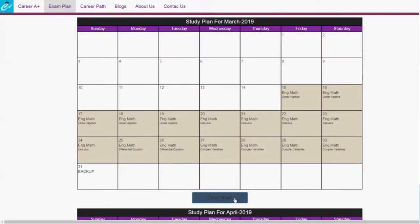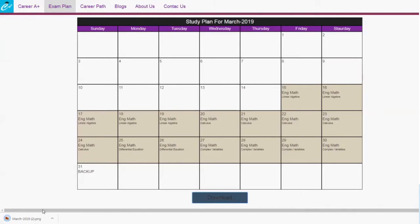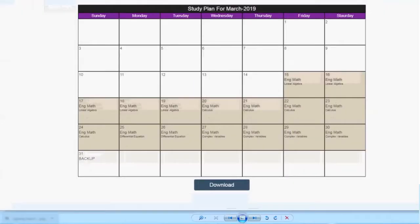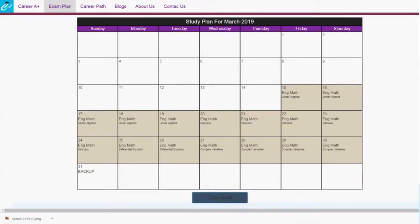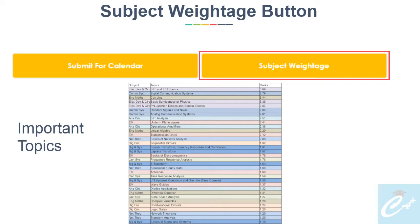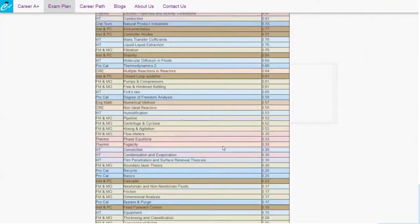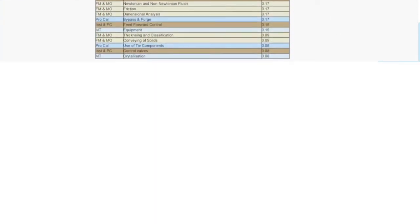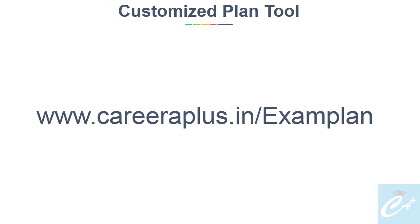To get the plan image, there is a download button after every month. Just click on it and the image of that month will get downloaded to your device. Now the last point in this section is the Subject Weightage button. Earlier in our video, we discussed the list of topics from highest to lowest average marks. You can get this list by clicking the Subject Weightage button. I will update the data and weightage every year once the exam is done.